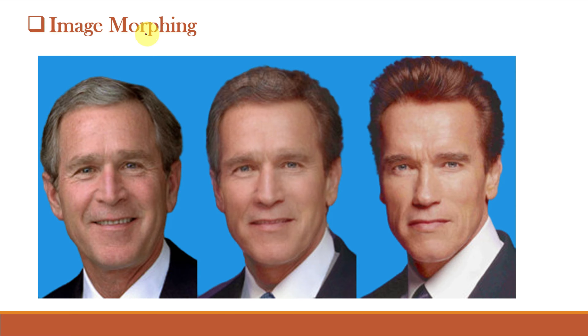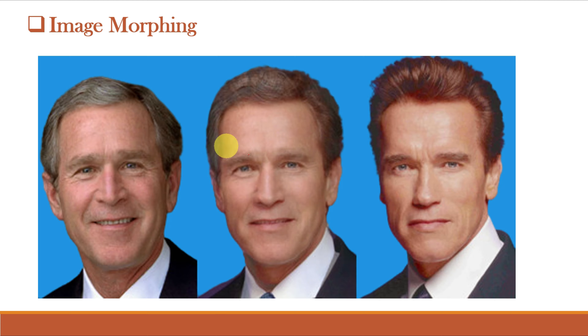We have already heard the term morphing — image morphing. What happens in morphing? It is a process of blending the images of two faces together, and the result is a fabricated facial image that contains features of the two original faces.